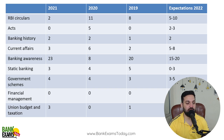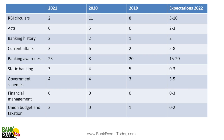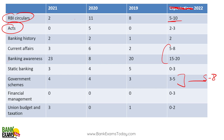Regarding exam trends — this is the reality, not expectation, based on what actually happened. RBI circulars: you can expect 5–10 questions again in 2023. From Acts, expect 3–4 questions. Banking history questions have reduced. Banking awareness gives a chunk of 15–20 questions every year. Static banking gives 1–2 questions. Government schemes are now giving more questions — 5–8 expected. Financial management gives fewer questions. Union budget also gives fewer. The key takeaway is: RBI circulars, various acts, and banking news are the most important parts of the syllabus.